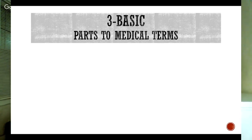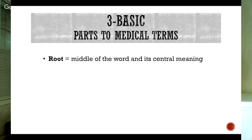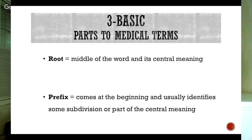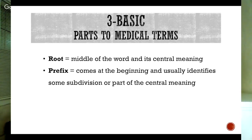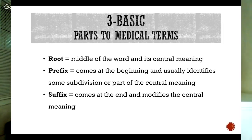What you'll quickly realize about medical terms is that words or phrases build upon one another to create these seemingly complicated medical terms, which is why the first step is to understand the basics of what makes up a medical term. There are three basic parts: a word root, which is usually the middle of the word and the central meaning; a prefix, which comes at the beginning and usually identifies some subdivision or part of the central meaning; and a suffix, which comes at the end and modifies the central meaning — what or who is interpreting it and what is happening to it.